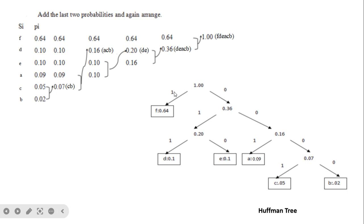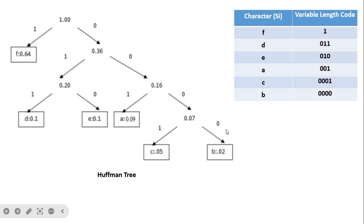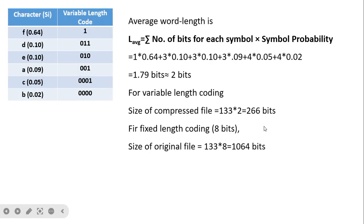It is not mandatory which side gets 1 or 0, but once chosen the rule must be followed consistently — here left branches are labeled 1. Using this tree: F is represented by just '1' (1 bit, most frequent); D is '011'; E is '010'; A is '001'; C is '0001'; B is '0000'. Characters D, A, B that are equiprobable get the same number of bits, while the most frequent F gets only 1 bit.